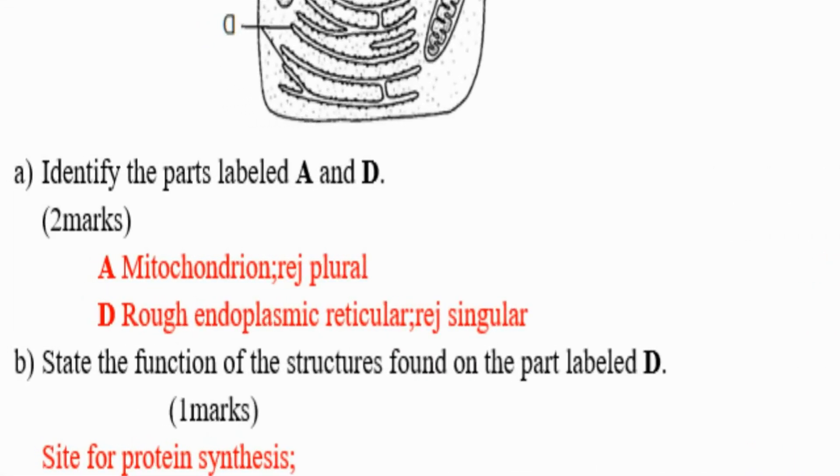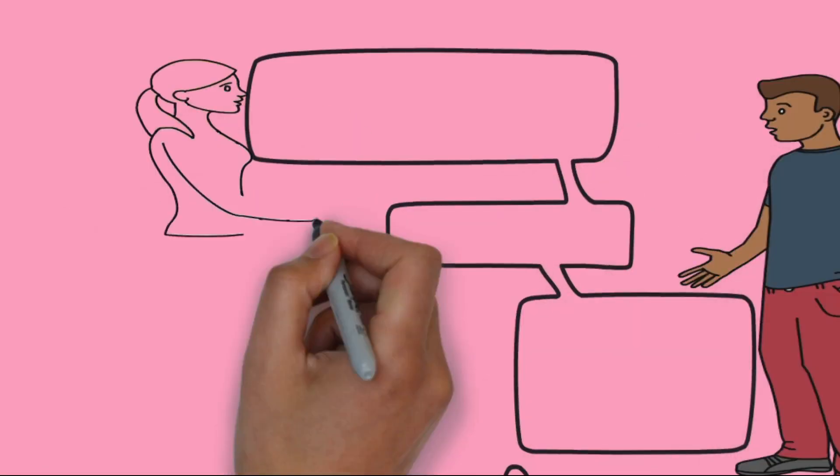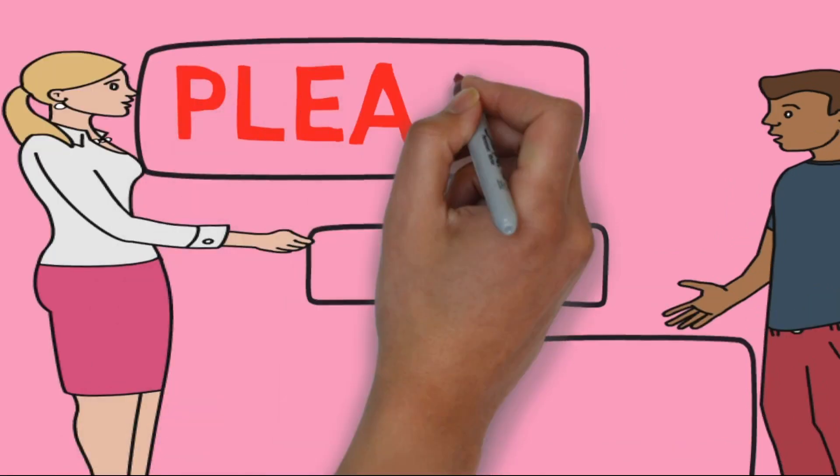A is mitochondria and D is rough endoplasmic reticulum. We are going for a short break, coming back shortly.